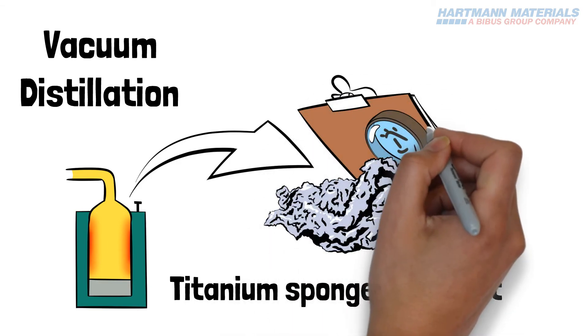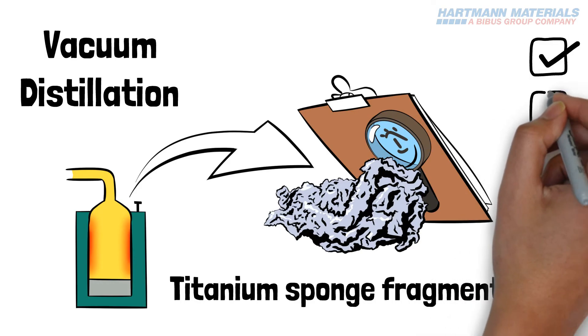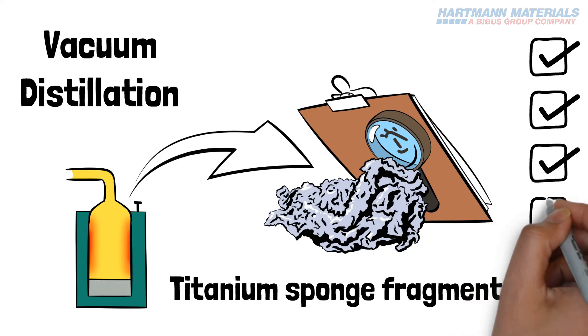The sponge is crushed, inspected, and samples tested for chemical analysis. Once the crushed sponge has passed all quality control, it can be used to form commercially pure ingots.